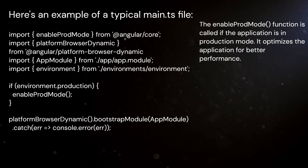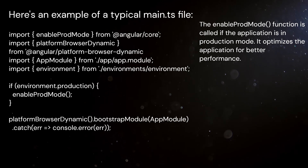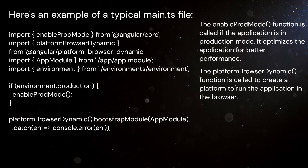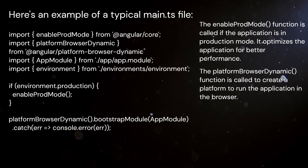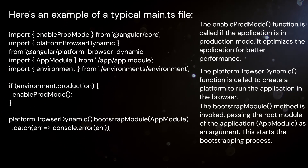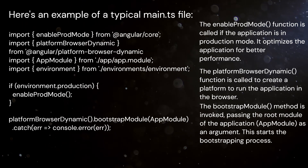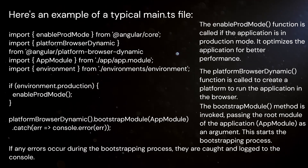The enableProdMode function is called if the application is in production mode — it optimizes the application for better performance. The platformBrowserDynamic function is called to create a platform to run the application in the browser. The bootstrapModule method is invoked, passing the root module of the application, AppModule, as an argument. This starts the bootstrapping process.